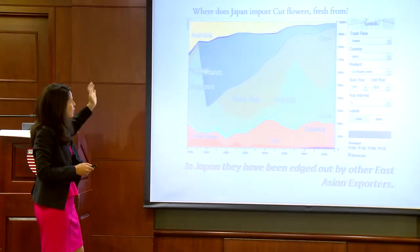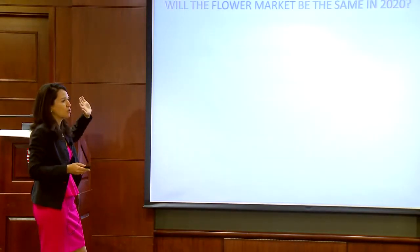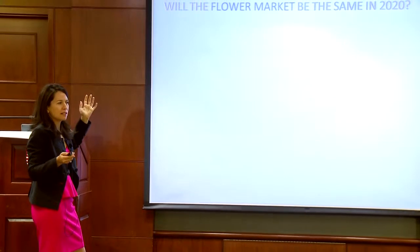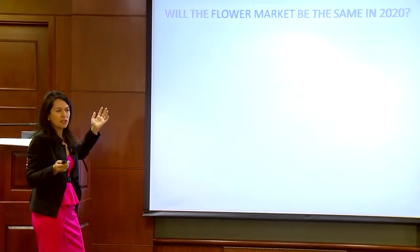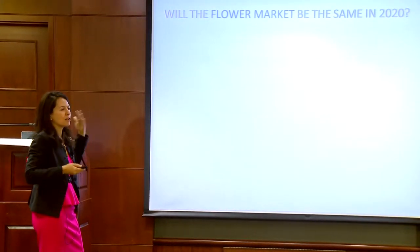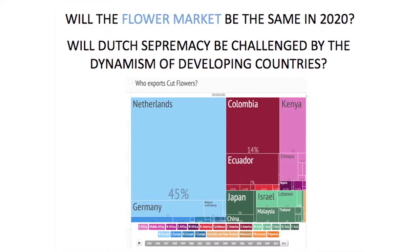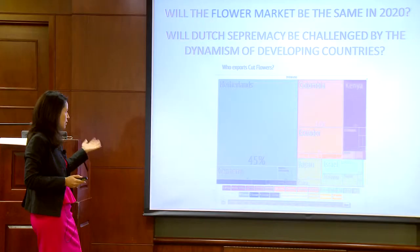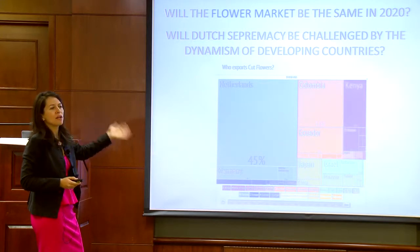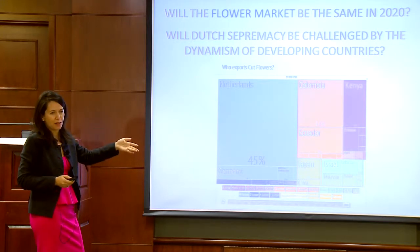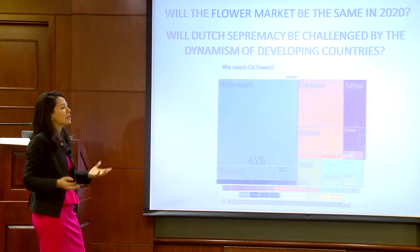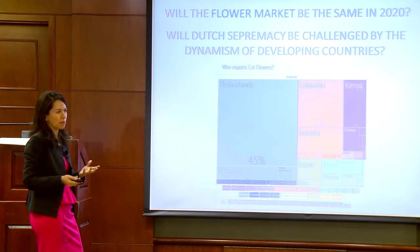After only a few visuals, you would probably have a different answer on whether Dutch supremacy in the flower market is going to be challenged by emerging markets. In the new 2011 atlas data, the Netherlands has already fallen to 45% — so it even gives a Dutch producer a hint of where the risks are coming from.